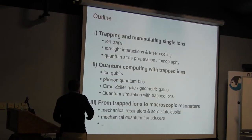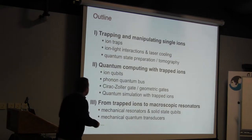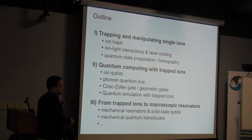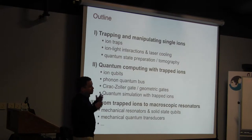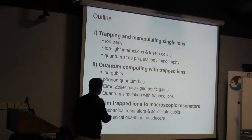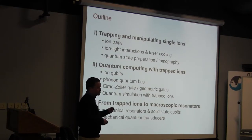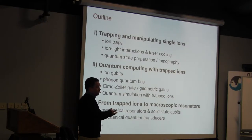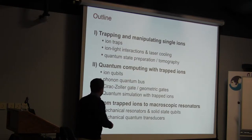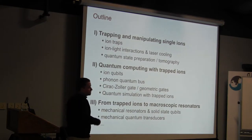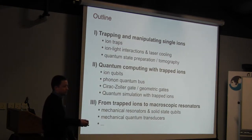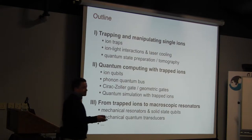The plan for these next three lectures is to use the trapped ion system as a toy system and explain the basics — the type of physics you can do with trapped ion physics, the concepts used to manipulate ions and the motion of ions. Then in the last lecture, we'll go to more recent research and describe how these concepts might be applicable also to manipulate the states of macroscopic systems.